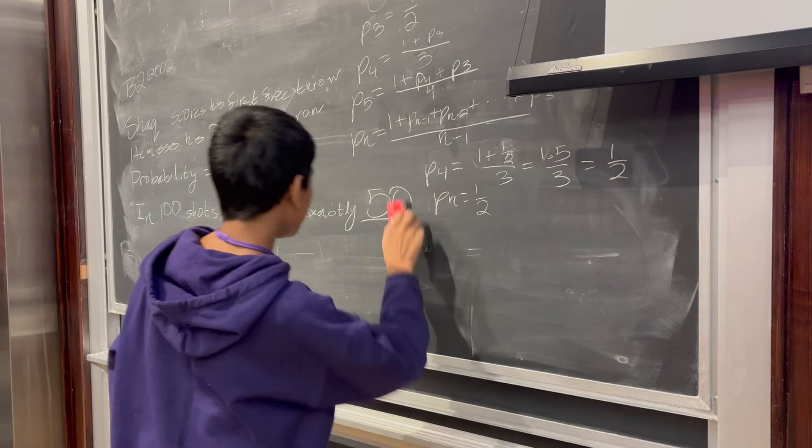You can use the board behind. Oh, I didn't see that there was a board behind. So let's figure this out. We know that P4 is equal to 1 half. That's our base case. Now, let's assume Pn is equal to 1 plus Pn minus 1 plus dot dot dot plus P3 over n minus 1, the formal definition. And let's assume that's equal to 1 half.